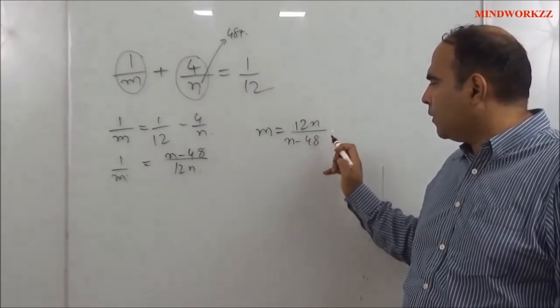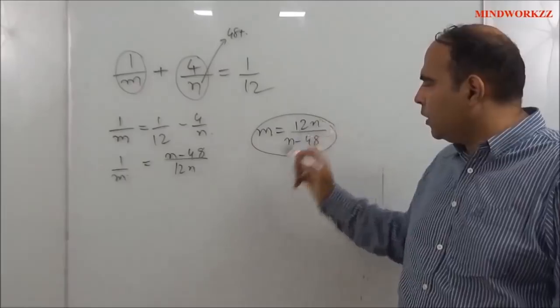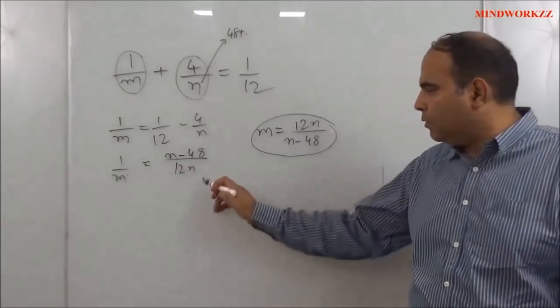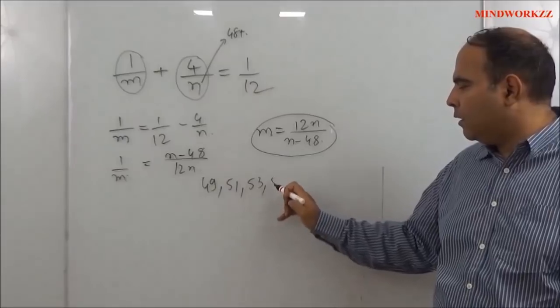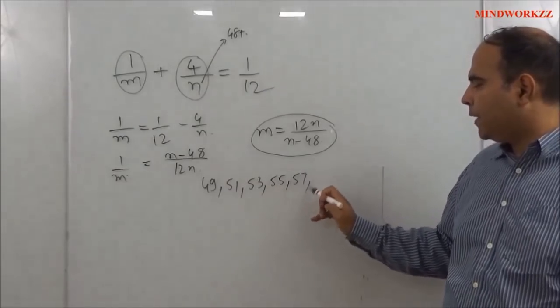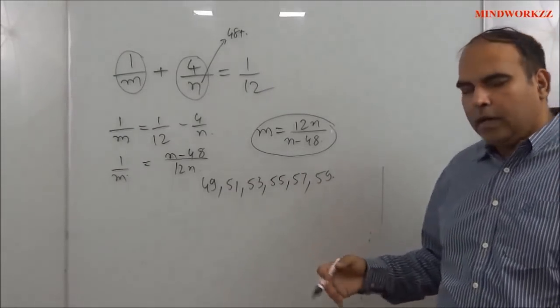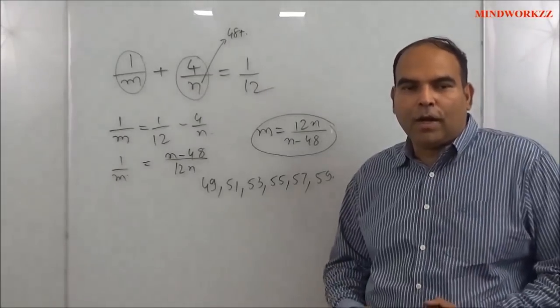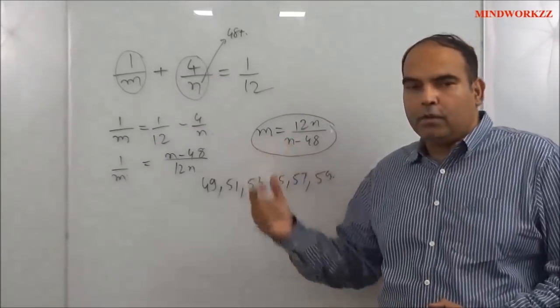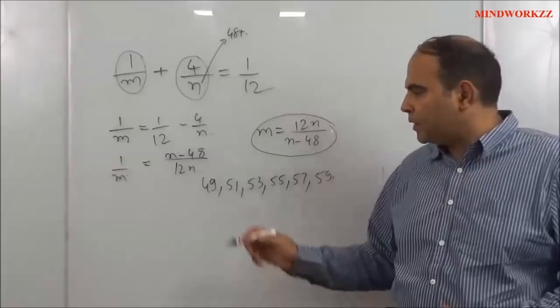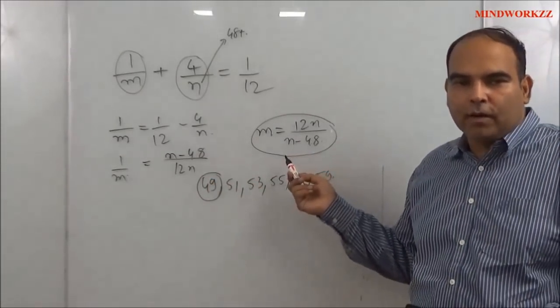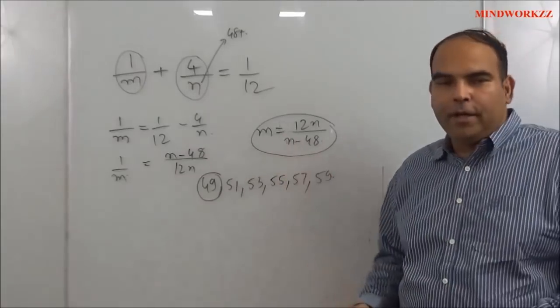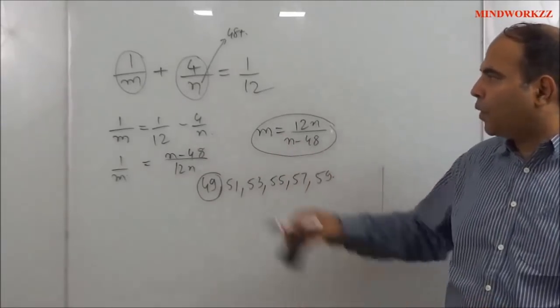Now with this transformation, if you start checking the values of n as 49, 51, 53, 55, 57, and 59, it becomes pretty easy to check which values do give you an integer value for m. So for example, at n equals 49, the denominator of this expression becomes 1, so naturally m will be integer, so n as 49